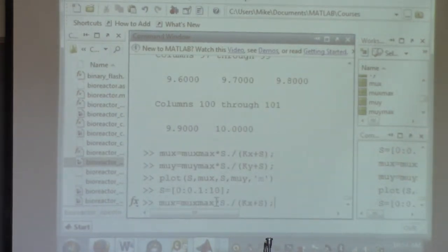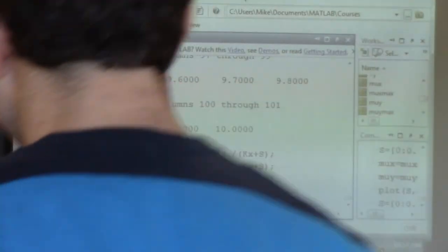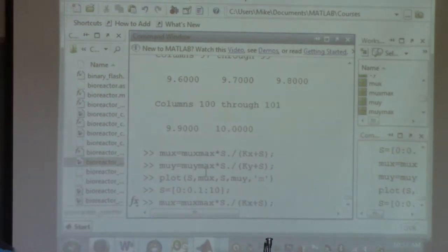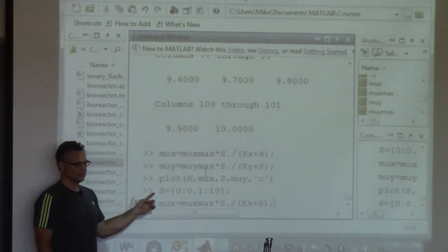And then I did this. If you look at this command here, what I'm trying to do is I want to create a plot of the two growth rates as a function of substrate. And you just saw the plot and you see that they cross somewhere, which I'll explain in a minute. So to do this, I created a vector, s, that looks like this.